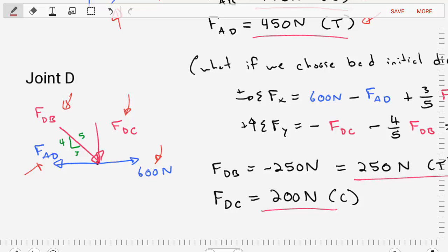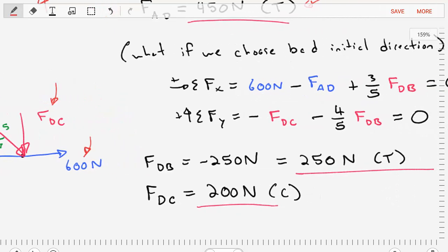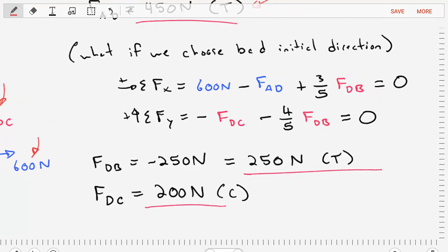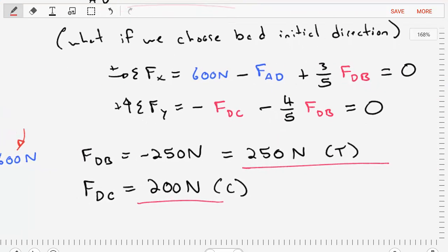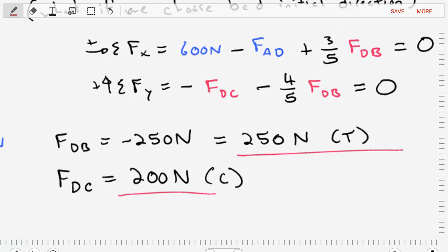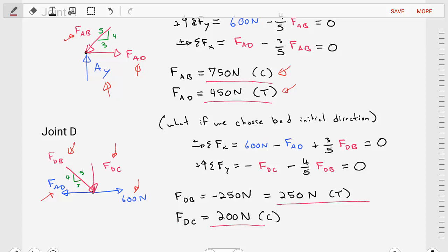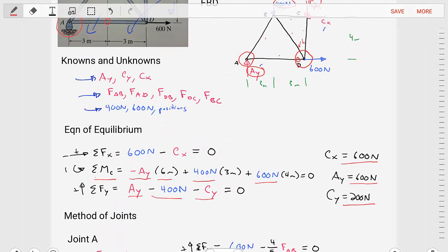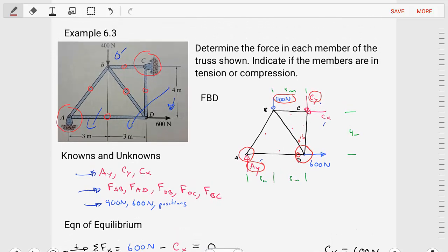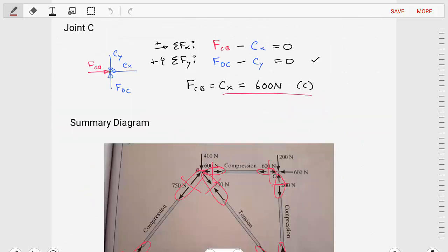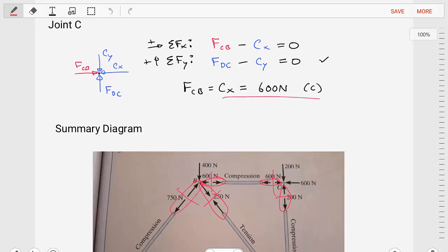Using the joint D diagram, we create equations of equilibrium, summing forces in X and Y, and solve those equations to find FDB equals 250 newtons in tension and FDC equals 200 newtons in compression. We have now found four of the five truss member forces.